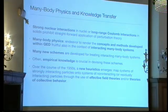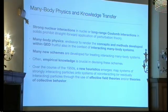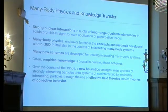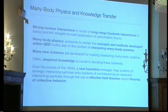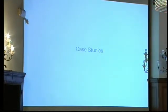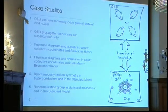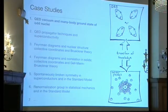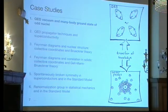In nuclear and solid-state physics, strong nuclear interactions or long-range Coulomb interactions prohibit straightforward perturbation theory. Many-body physics can be seen as an endeavor to render the concepts and methods developed within QED fruitful also in the context of interacting many-body systems. Over the course of the 1950s, a new heuristics emerges: mapping systems of strongly interacting particles onto fictitious new systems of non-interacting or residually interacting particles through effective field theories and/or theories of collective behavior. Let me now turn to my case studies.